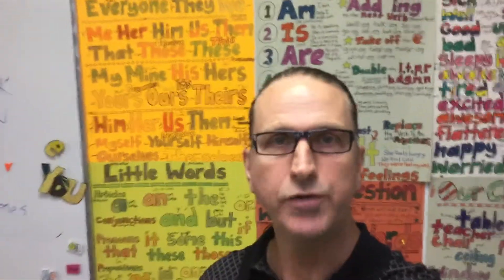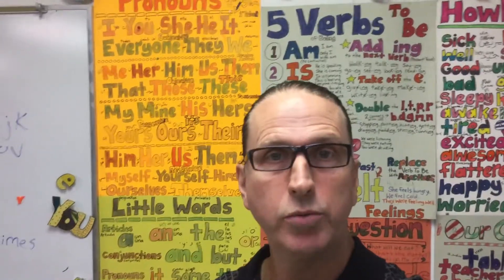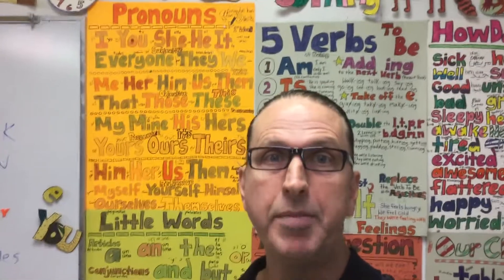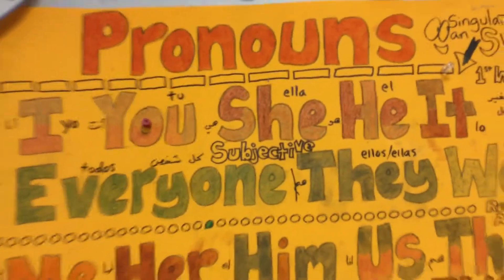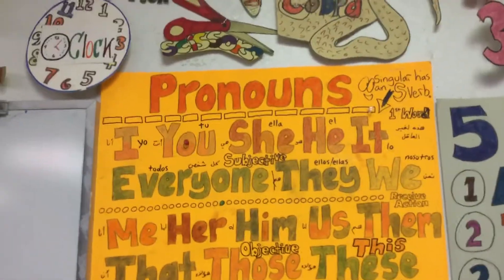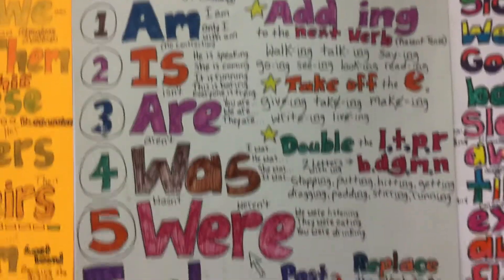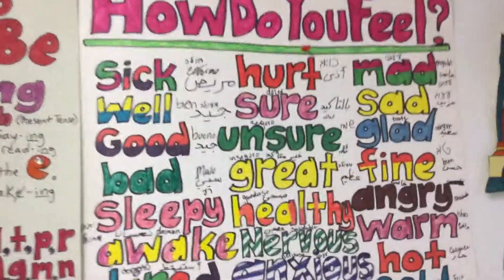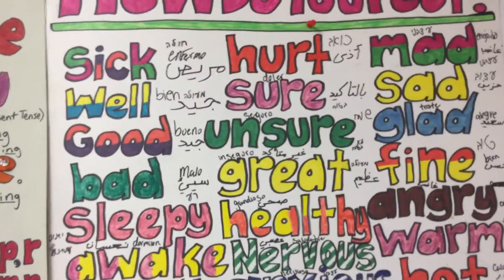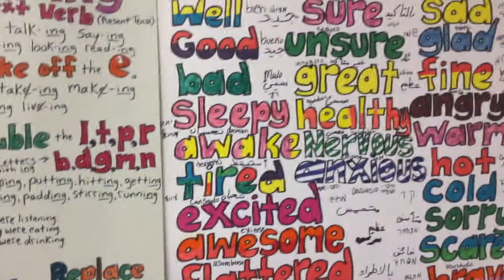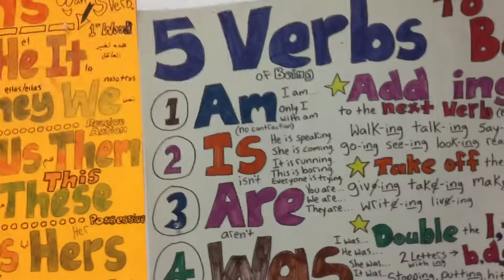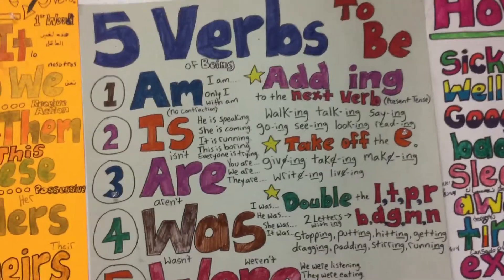Now we understand pronouns and verb to be and adjectives, and we know we can make a three-word sentence. So let's look at it one more time and then we're going to learn some new things about making questions today. Subjective pronouns begin a phrase, and then we can go on to verb to be and use any one of the verbs to be with an adjective. I feel good, I feel bad, she was hurt, we were healthy. One, two, three words make a sentence.